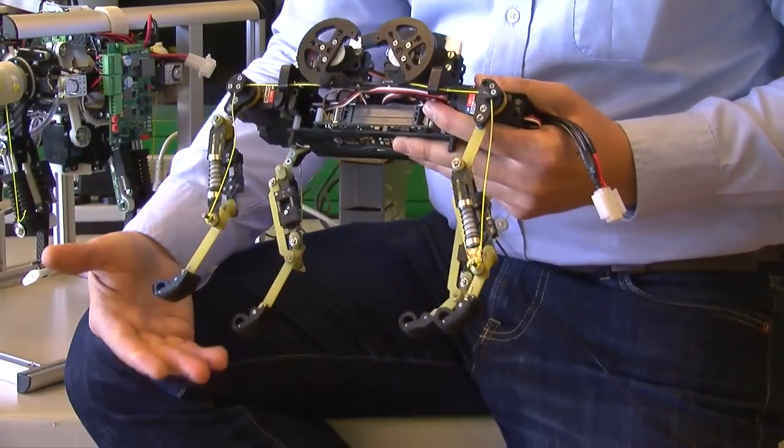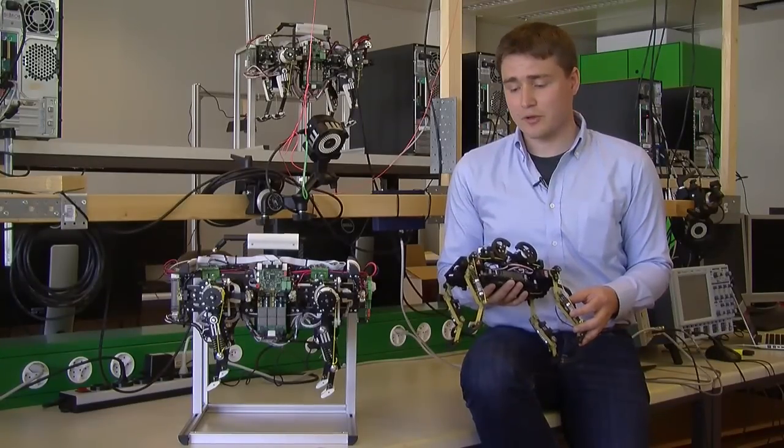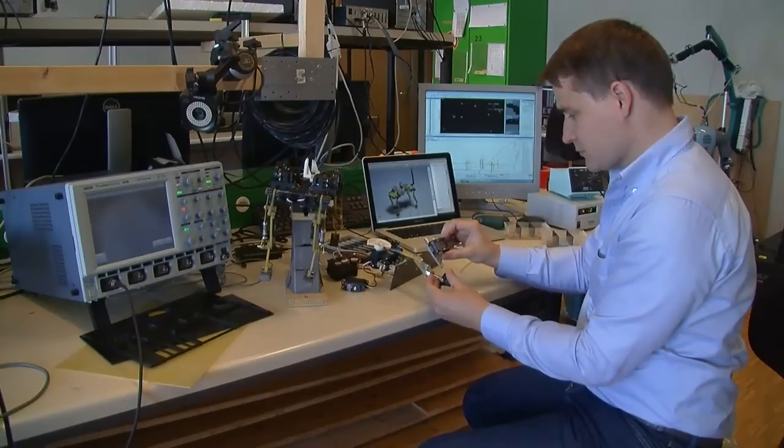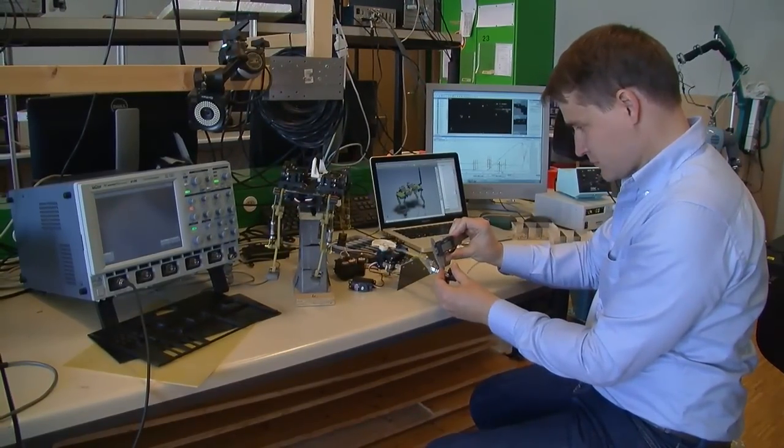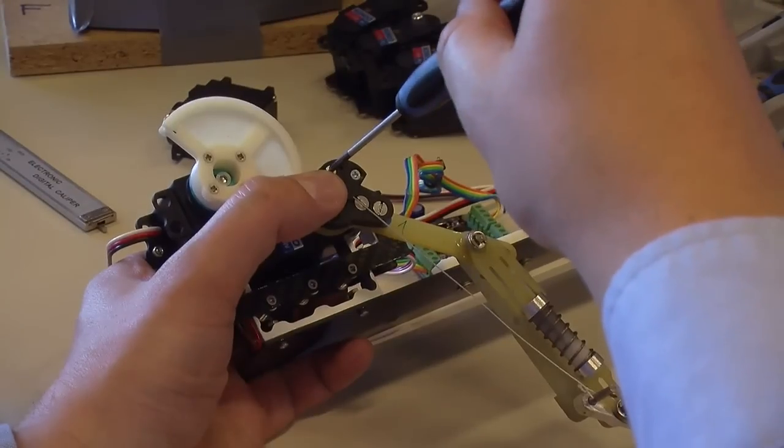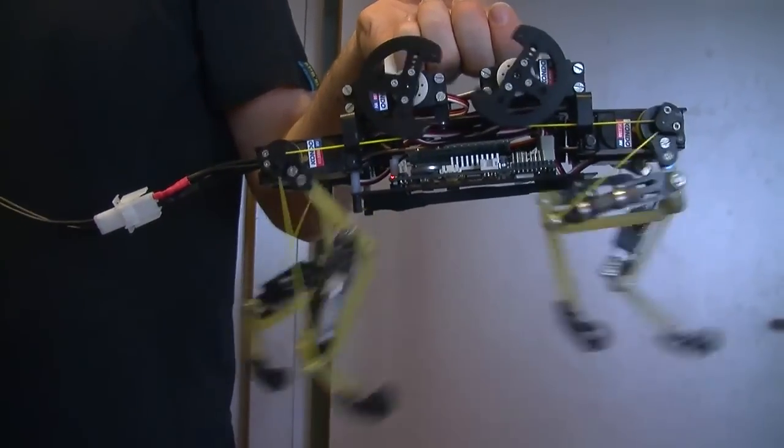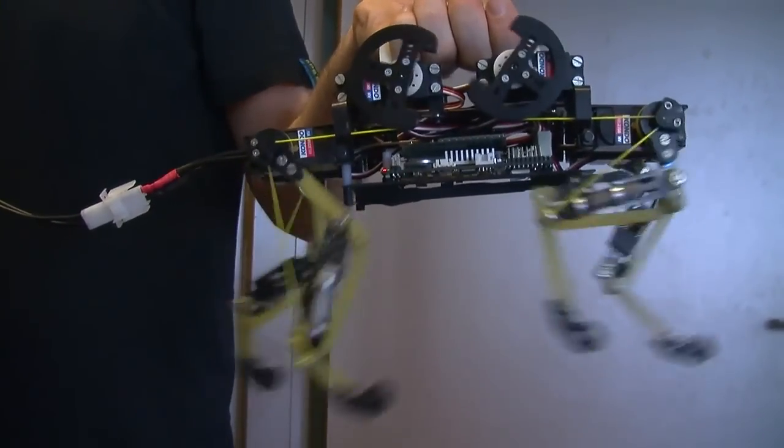We're using actuators per leg as a replacement for the muscles. And eventually the goal is to have a robot which is easy to use, very robust and very fast. And eventually it's also very dynamically running and kind of naturally running.